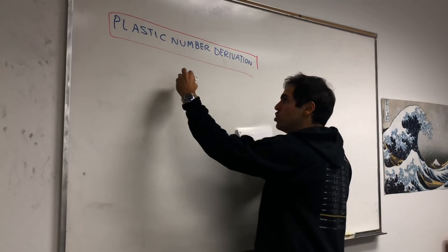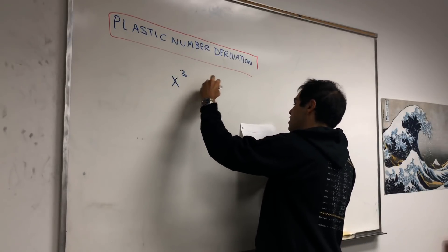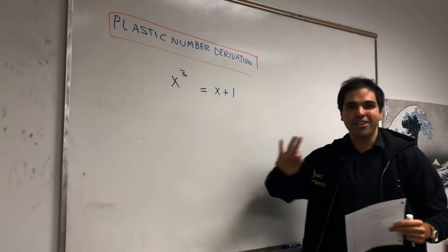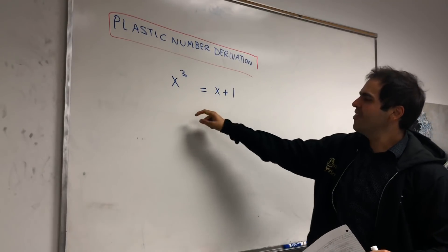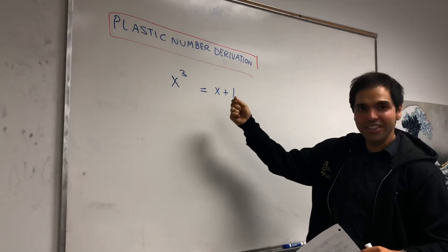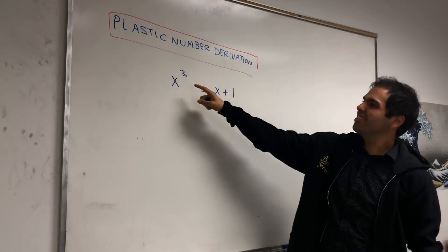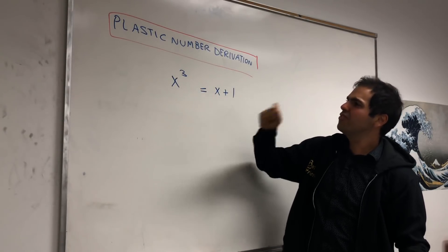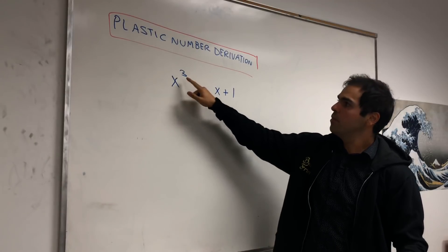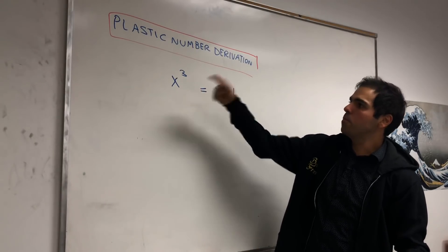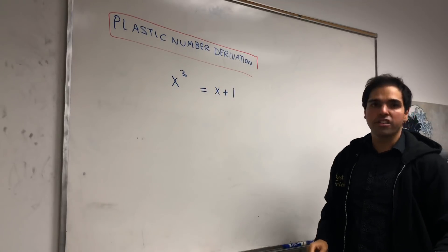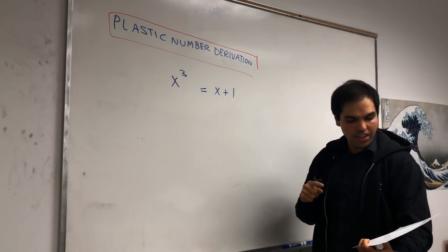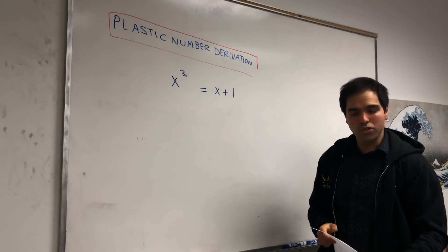It is defined as the real solution of the equation x cubed equals x plus 1. Turns out there is just one, and follows from the formula for the cubic equation, and I just want to remind you, or maybe if it's your first time, how similar it is to the Fibonacci numbers, or the golden ratio, because the golden ratio is defined to be the positive solution of x squared equals x plus 1. And here the plastic number is the positive solution of x cubed equals x plus 1.